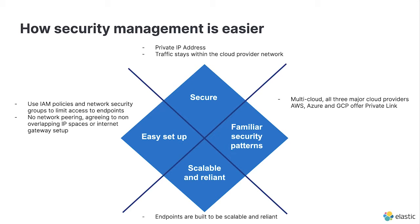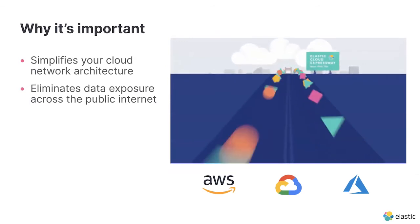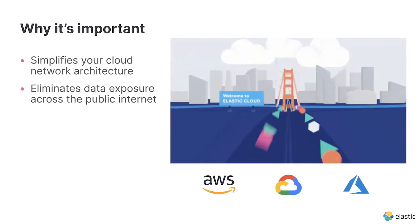For instance, AWS recommends PrivateLink to connect to Kinesis or even to their own S3 endpoints if you want to connect to them securely. These endpoints are set up to be secure, reliable, and scalable — you can horizontally scale them by creating more than one endpoint if you expect traffic to spike. With that, let's go into why PrivateLink is important and what challenges it helps you solve.